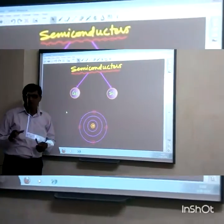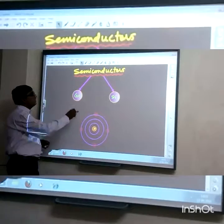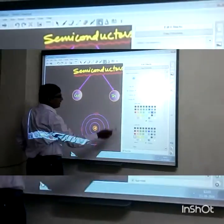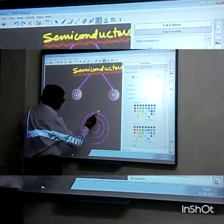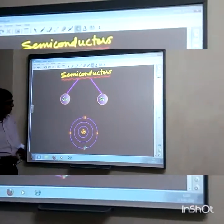We are going to see this atomic structure. Atomic structure, in its outermost orbit, we will get four electrons. First electron, second, third and fourth. There are four electrons in outermost orbit.